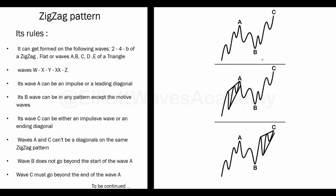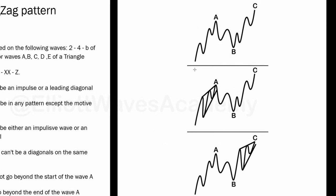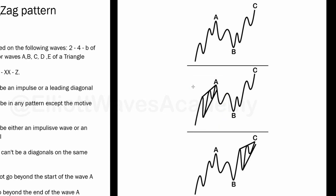This pattern has three shapes and different forms. Its wave A can be a leading diagonal pattern, which is apart from the impulsive waves we saw in the previous videos. Wave B is a corrective wave and it can be in any corrective pattern — which means it can be a zigzag, it can be a flat, it can be a triangle pattern, it can be a complex — it can be anything.